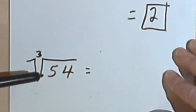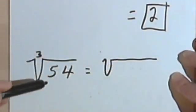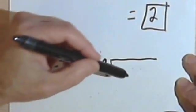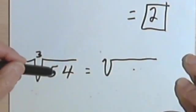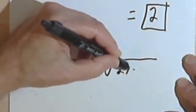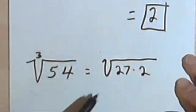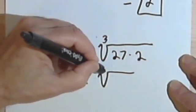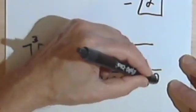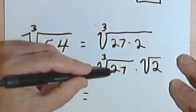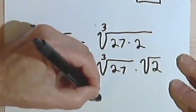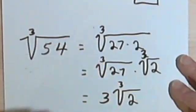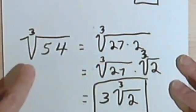Simplifying a cube root involves the same process. Here I'm looking for two factors of 54 that multiply together to give me 54, where one of those factors is a perfect cube. Well, 54 is 2 times 27, so I've got 27 and 2 making up 54. I'll rewrite that as the cube root of 27 times the cube root of 2. The cube root of 27 is 3, because 3 times 3 times 3 is 27. So I end up with 3 times the cube root of 2. This is the simplified form of the original problem.